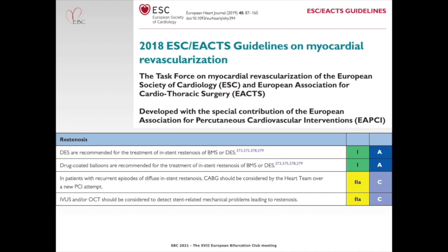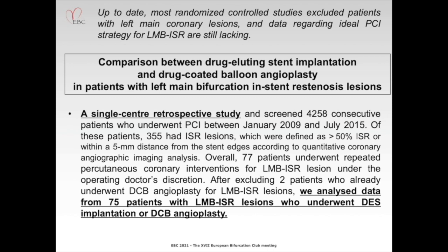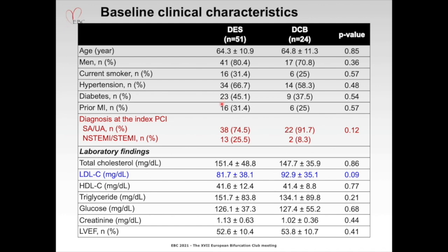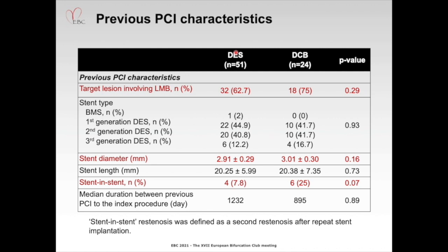As you already know, the guideline recommends drug-coated balloon angioplasty and repeat drug-eluting stent implantation for in-stent restenosis lesions as class 1A. However, the clinical prognosis between drug-coated balloon angioplasty and repeat drug-eluting stent implantation, especially for left main bifurcation ISR lesion, is largely uncertain. We compared the clinical outcome between drug-coated balloon angioplasty and repeat drug-eluting stent implantation in patients with left main bifurcation ISR lesion. This is a single-center retrospective study including 75 patients with left main bifurcation ISR lesion who underwent repeat PCI.